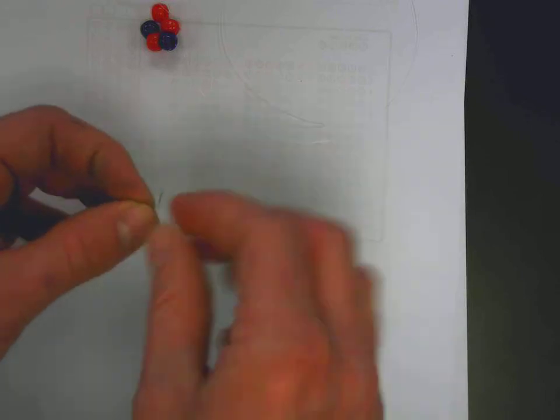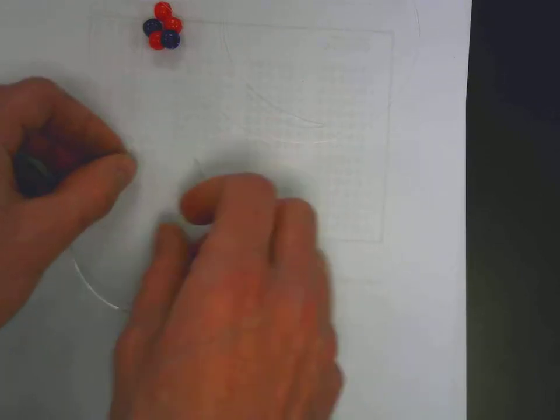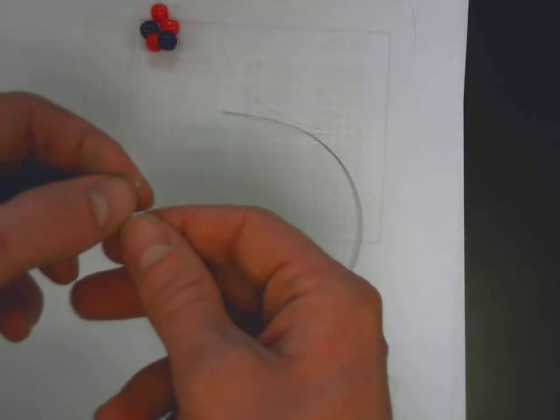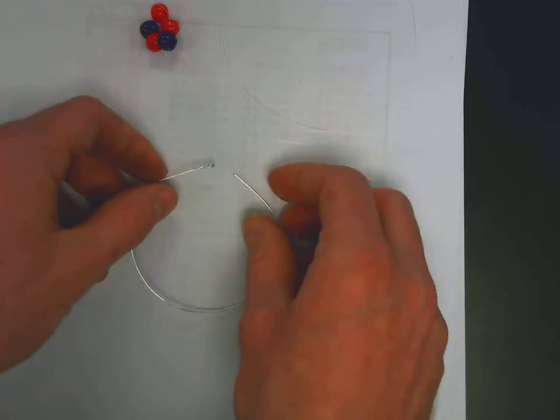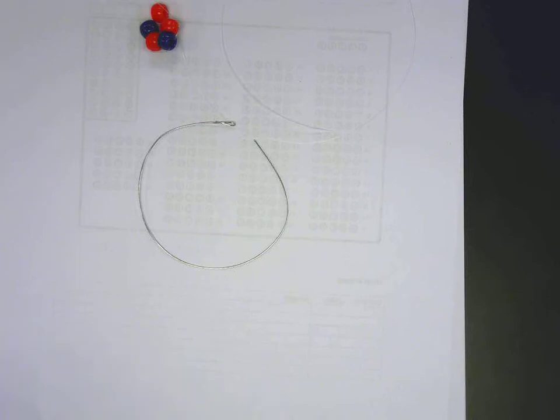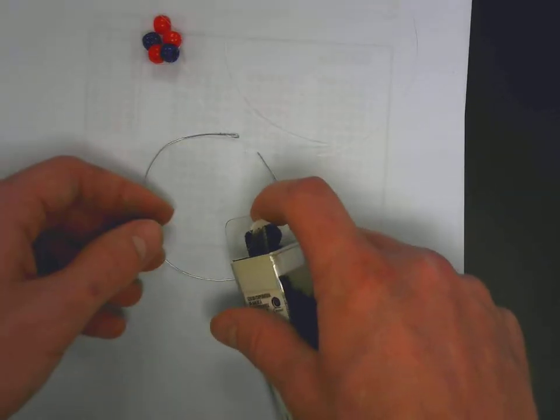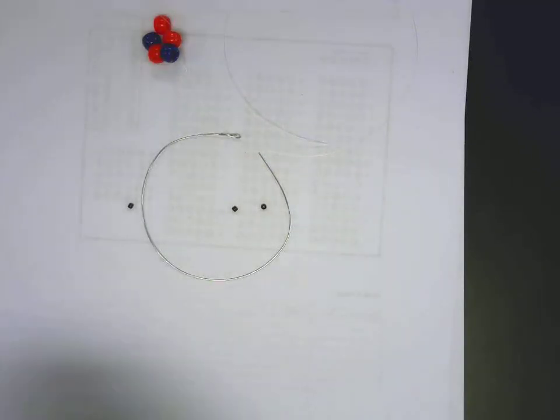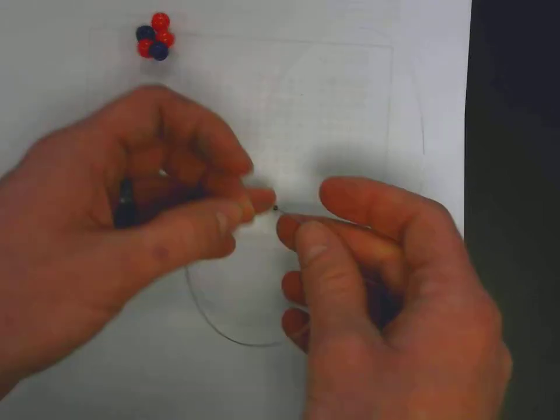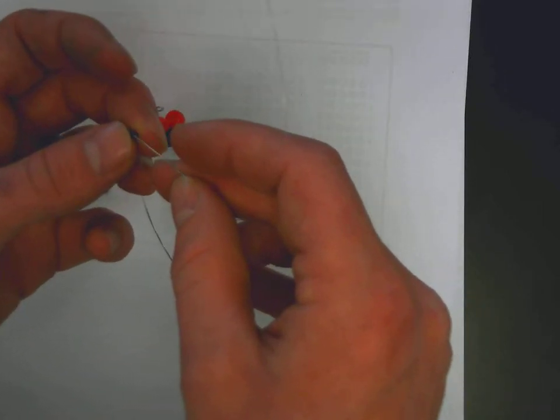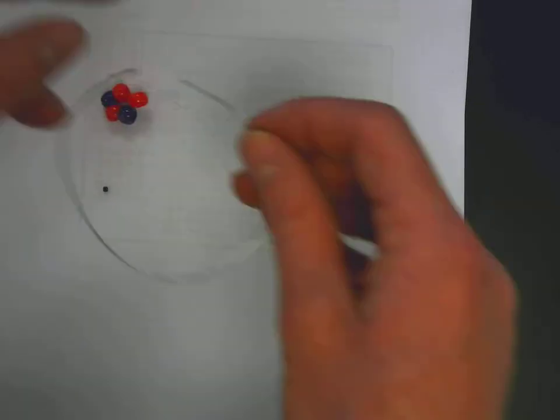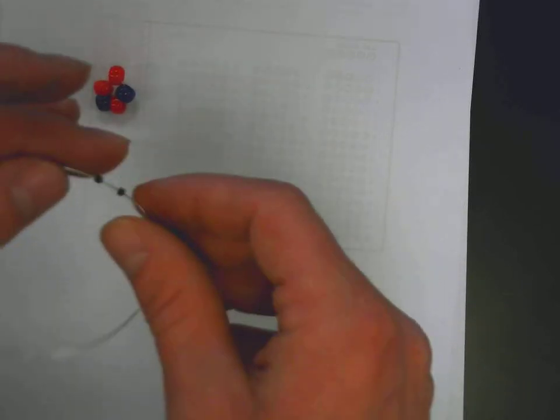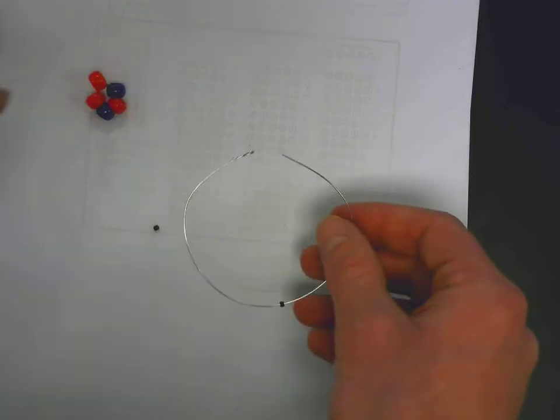You'll need to loop around, make a loop on one end. Sometimes it's easier to push it up against the table. Careful with this wire, it's easy to get poked. So loop one end, and then we'll need to feed on the electrons. So I use these smaller beads for the electrons. Feed on the correct number of electrons for the principal energy level.